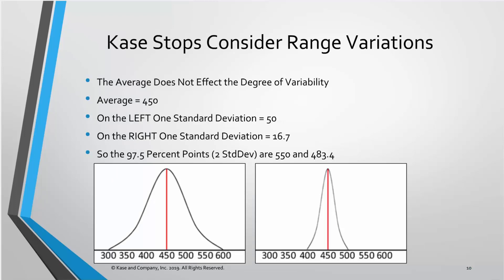One of the things that the CASE stops do is address the variation in volatility — the variability in the distributions of volatility. A lot of people have traditionally used multiples of average true range, which is the way Wells Wilder talks about it in his book. So if the average true range is 10 cents, then 1x is 10 cents, 2x is 20 cents, and 3x is 30 cents. But that does not account for the variability or the skew in the distribution — the bell curve — of volatility.